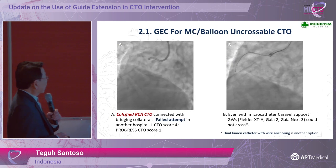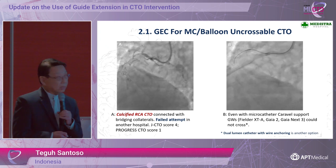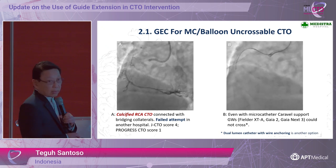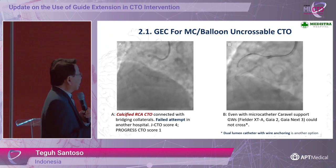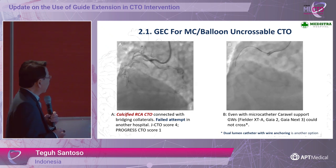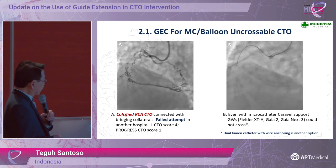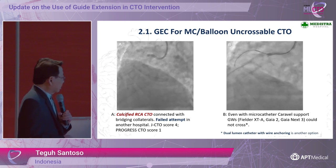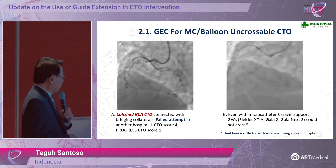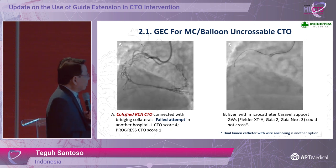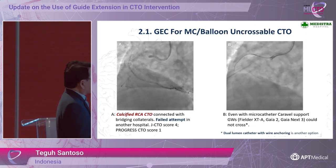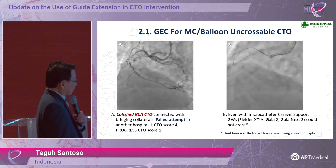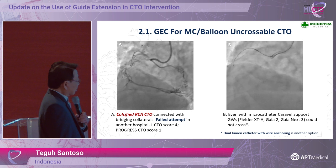The second indication is antegrade support for micro catheter or balloon in cases of uncrossable CTO. One example: a right coronary artery case, failed attempt in another hospital, J-CTO score four, PROGRESS CTO score one. Even with micro catheter Caravel support, various types of wires could not cross.